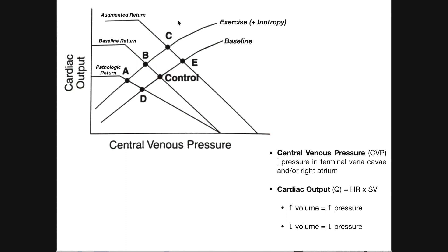At first glance, this figure looks awfully complicated, mainly because we have two different sets of curves. One set has a positive slope, and they're intersected by these other curves which have a negative slope. So there are two sets of curves, and each one represents something different. We need to talk about what both of them are, and then we'll answer some questions about what it means to be at different points on the graph.